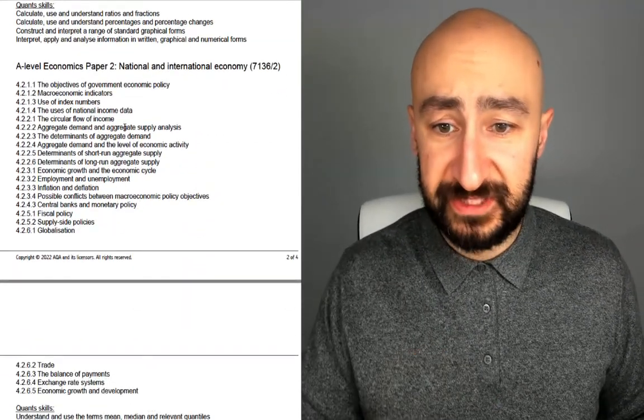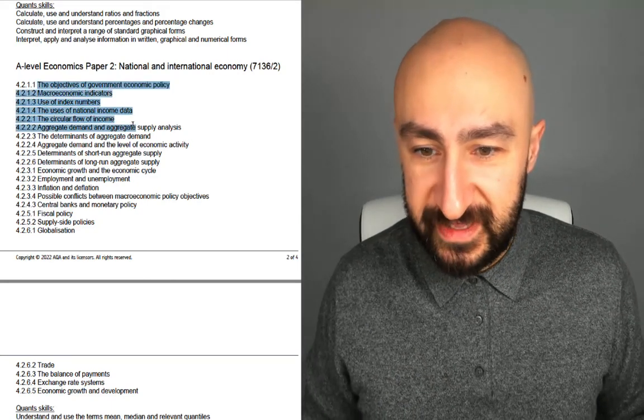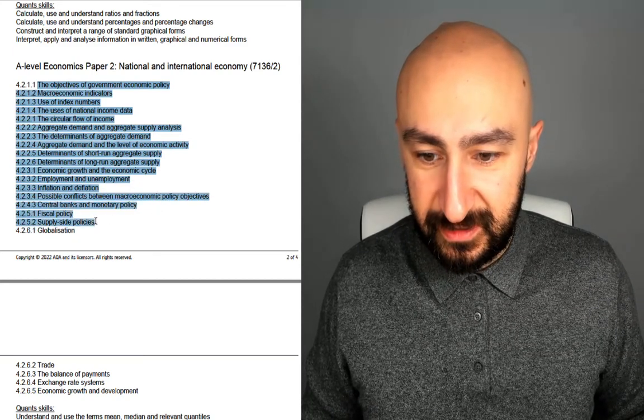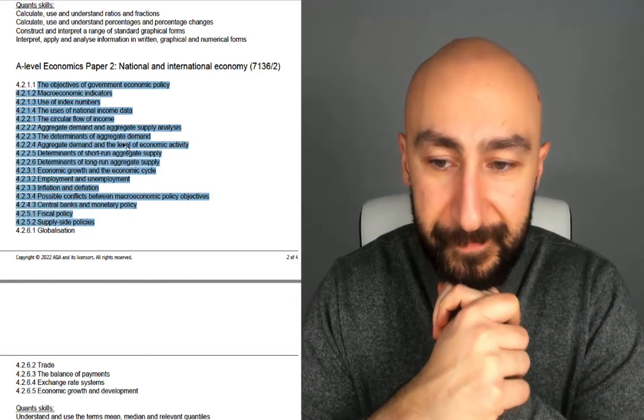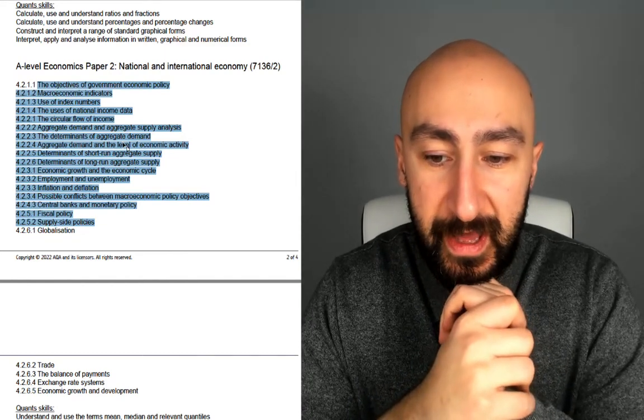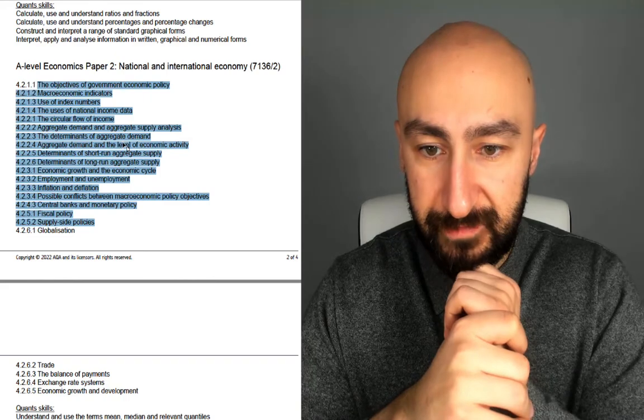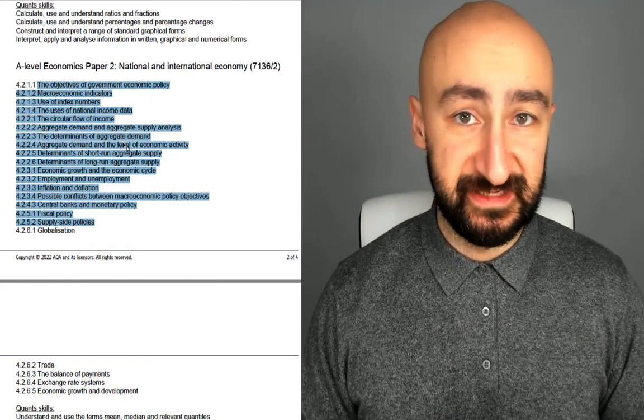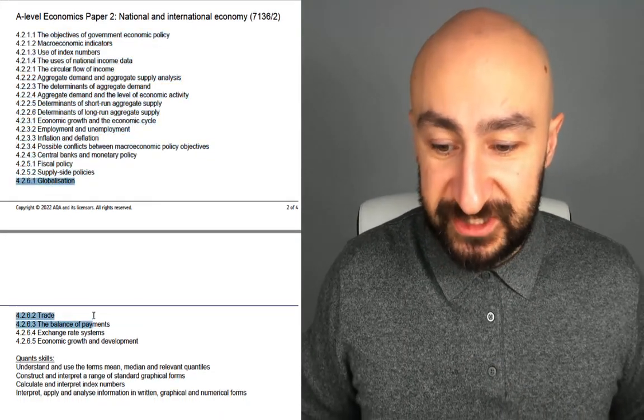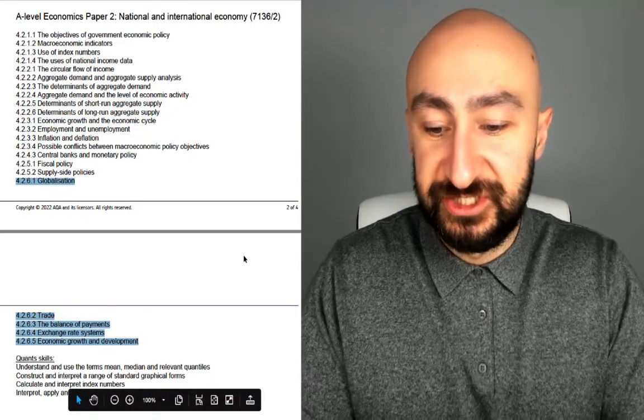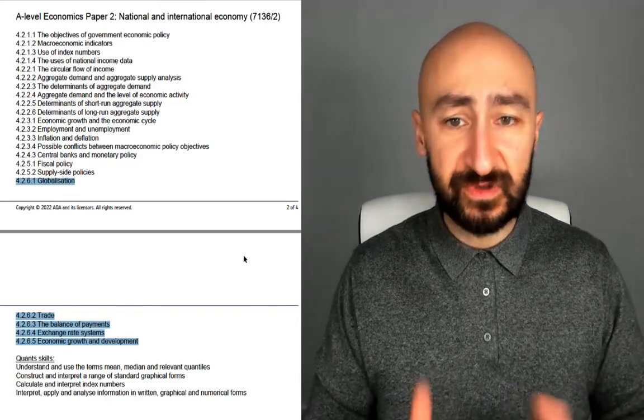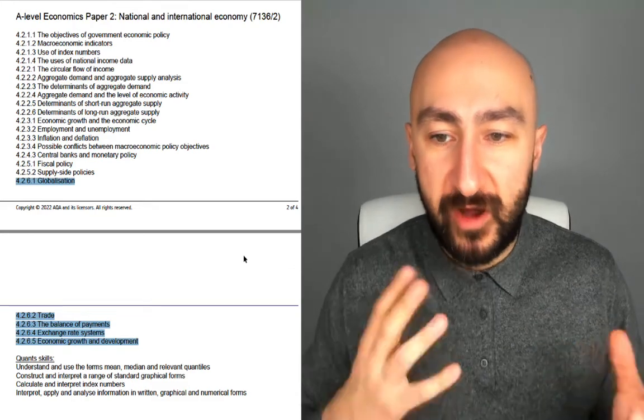Paper two, the objectives of government economic policy. All of this is to do with all of that essentially. There'll be a case study or probably I would say maybe a case study here in terms of which policy to use to maybe achieve the macroeconomic objectives. And there'll be maybe a case study on the international side of things where you've got globalization, trade, balance of payments, exchange rate systems, economic growth and development. So this one's a bit more difficult. Paper two, macro is always difficult. You can't guess anything, really.